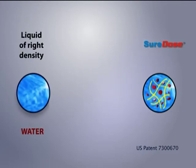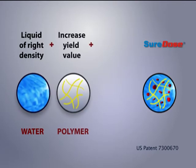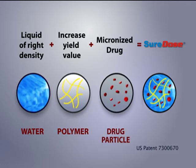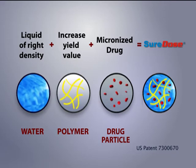The three elements are: a liquid of the right density, a polymer with a yield value, and a micronized drug. Let us take a better look at the role of each element.